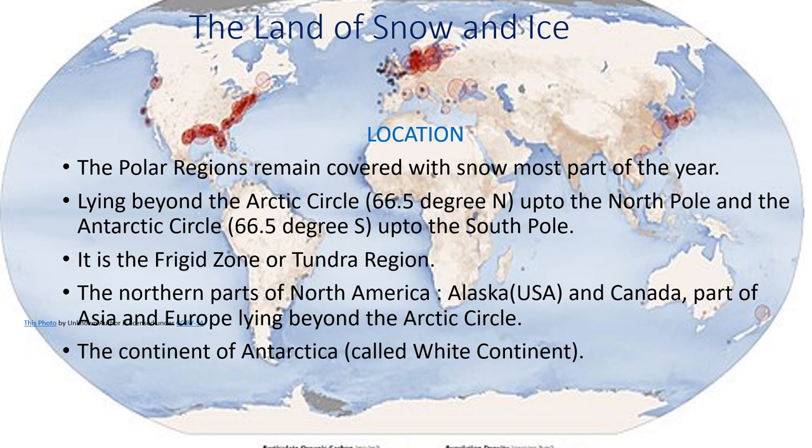Here is the globe — you can see the North Pole and South Pole. It is the Frigid zone or Tundra region: the northern parts of North America, Alaska of USA, and Canada, parts of Asia and Europe lying beyond the Arctic Circle, and the continent of Antarctica, which is called the White Continent.